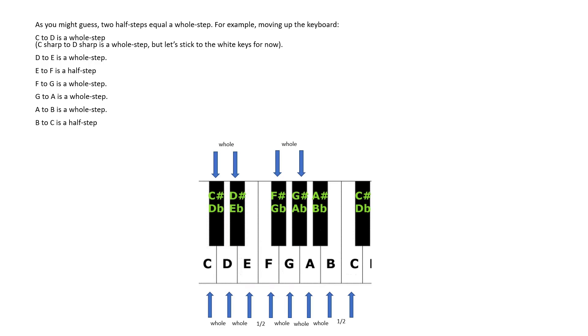D to E is a whole step. E to F is a half step. No black key between. F to G is a whole step. G to A is a whole step.